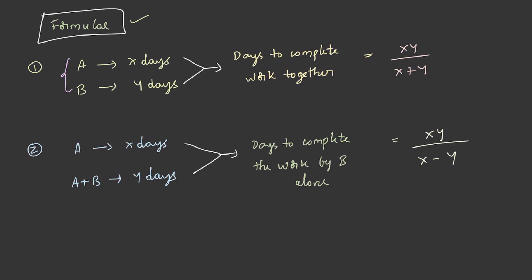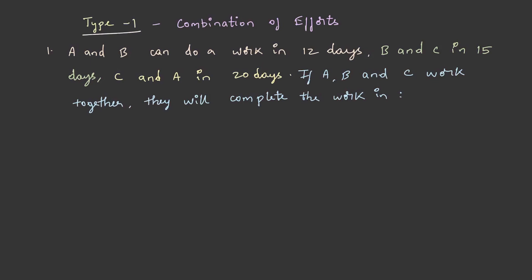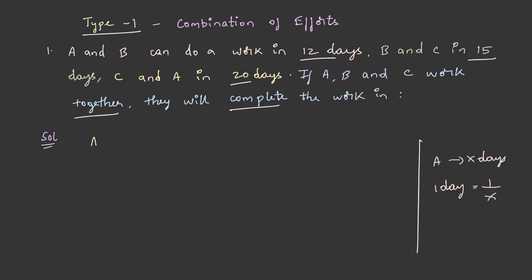Having understood the shortcuts and formulae, let's solve Type 1 questions. A and B can do a work in 12 days, B and C in 15 days, and C and A in 20 days. If A, B and C work together, they will complete the work in how many days? Using the shortcut, A+B's one day work is 1/12, B+C's one day work is 1/15, and C+A's one day work is 1/20.